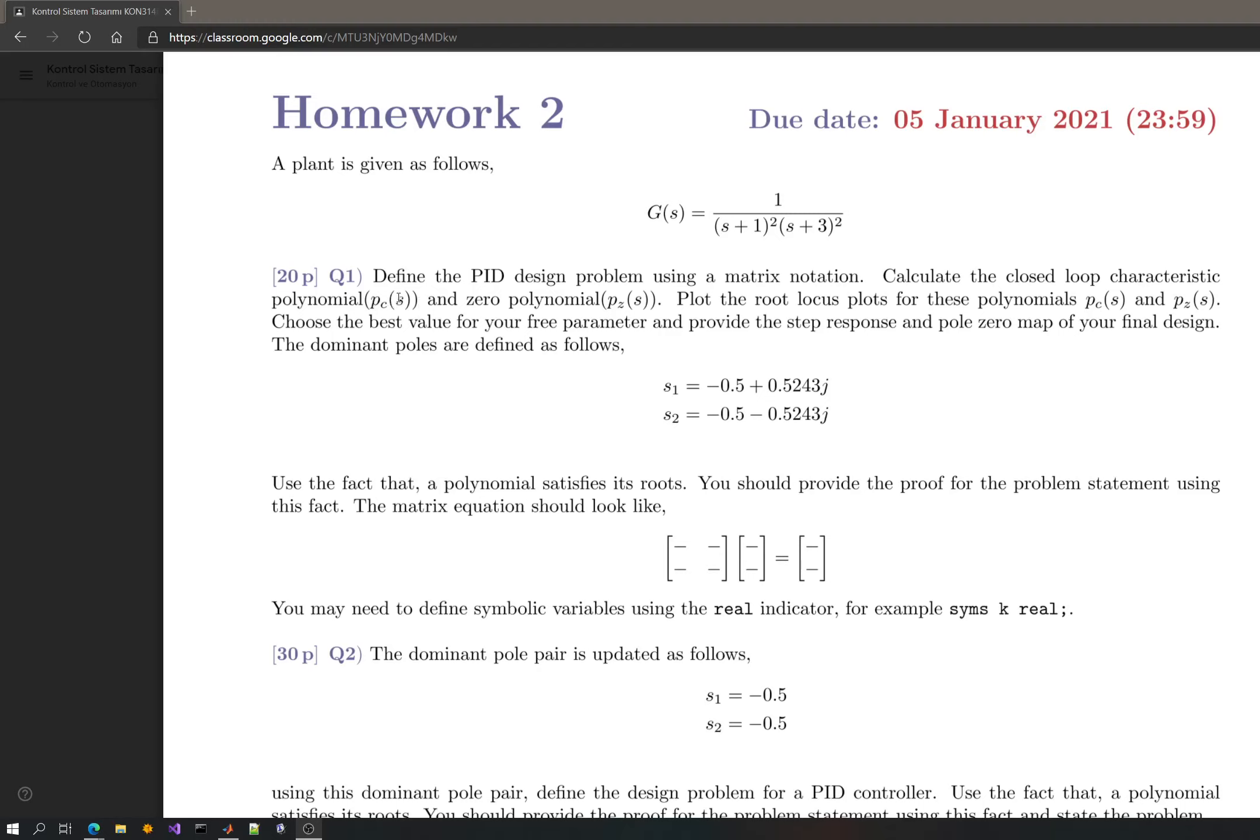You have to plug in these unknowns into the polynomial. There should be only one variable here in PCS, the free variable. You will also define the zero polynomial, which is the numerator of the closed loop. You will also again have only one parameter in here if you plug in these. So you should plug them in.